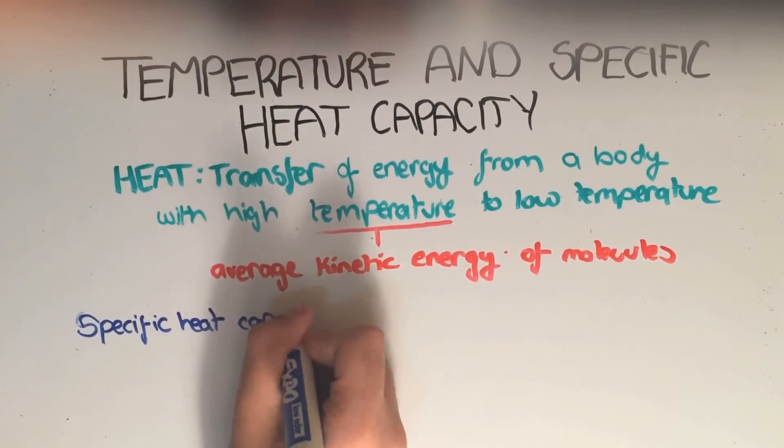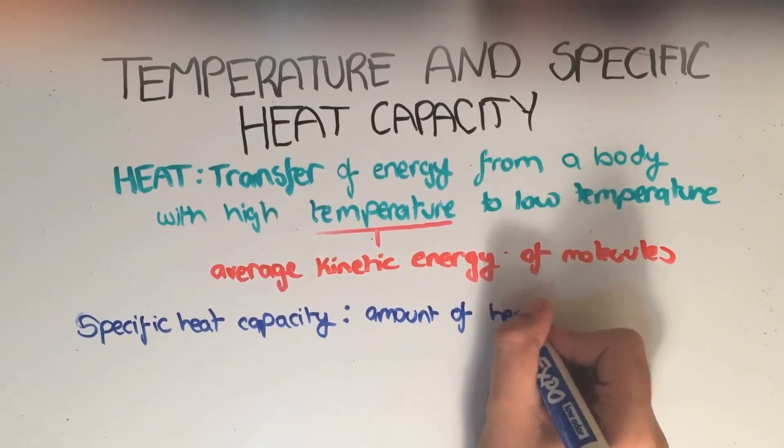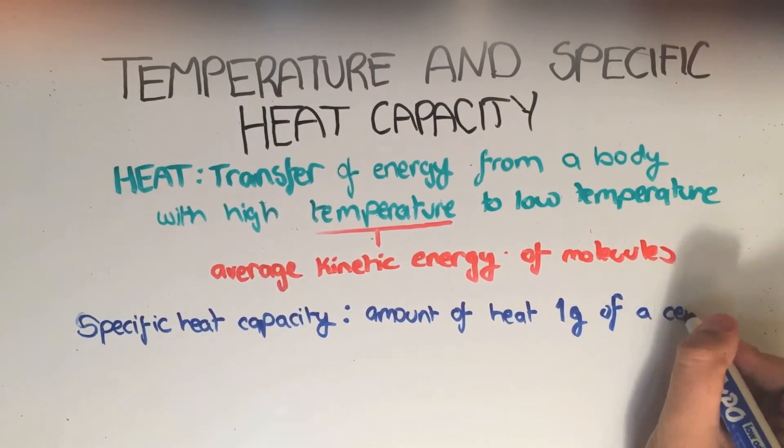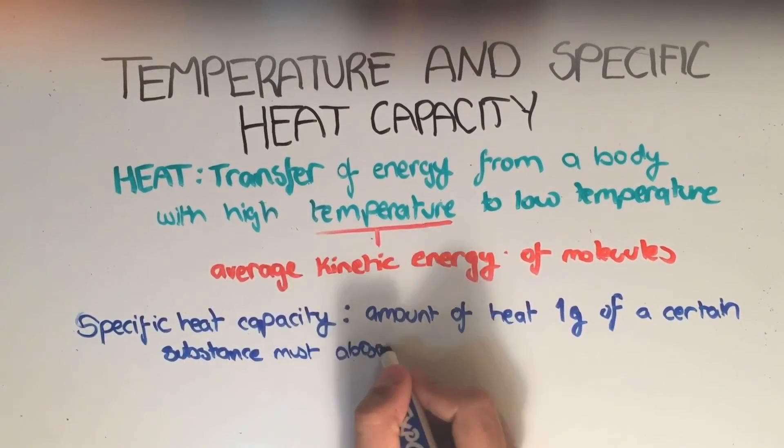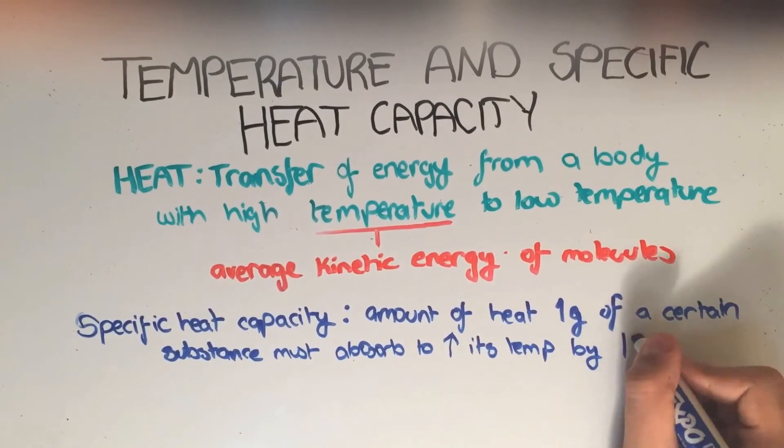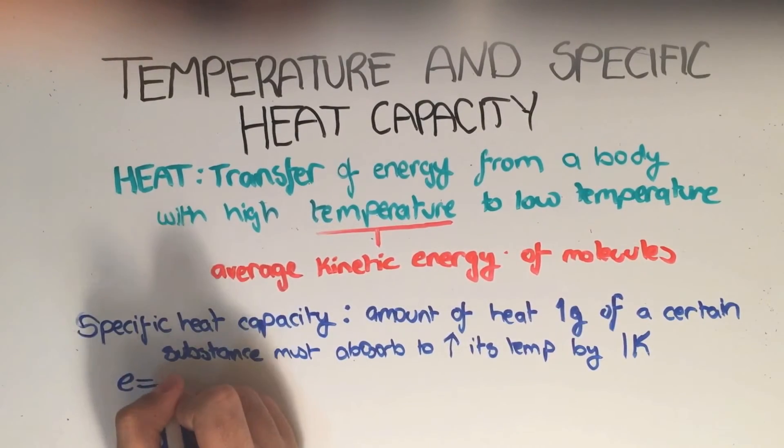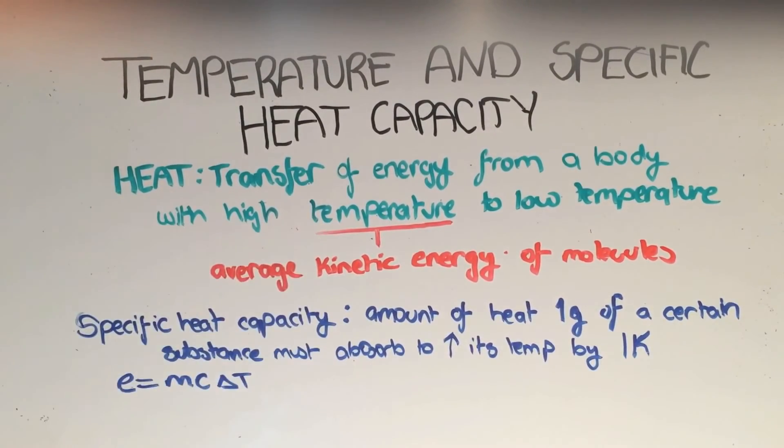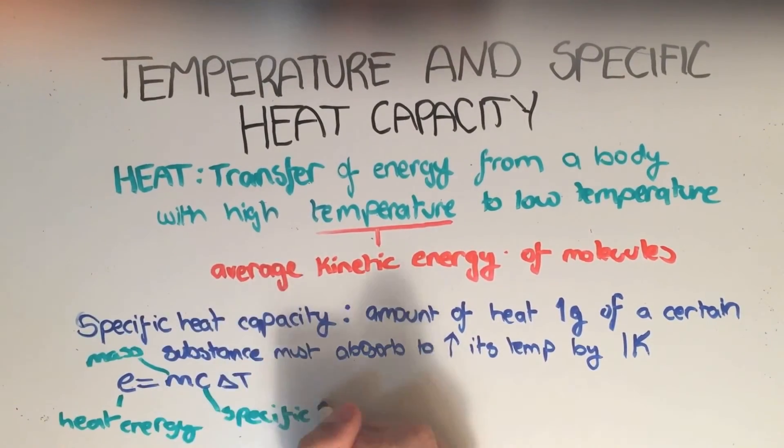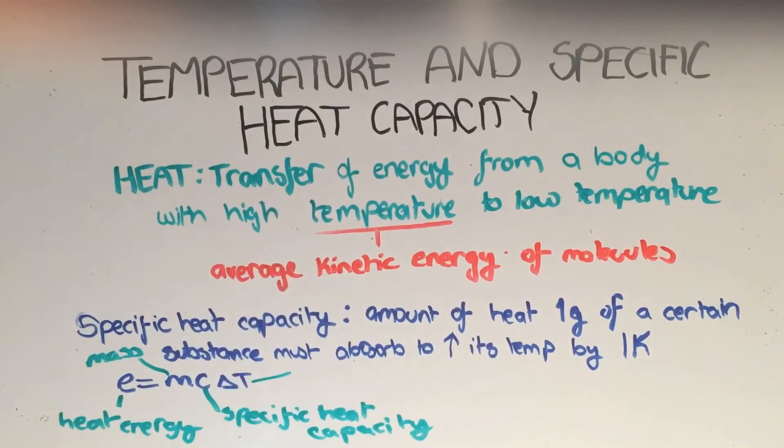The specific heat capacity, however, is the amount of heat 1 gram of a certain substance must absorb to raise its temperature by 1 Kelvin or 1 degree Celsius. This is represented by the equation E equals MC delta T. While E is the energy supplied, M is the mass, C is the specific heat capacity, and T is temperature.